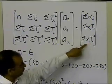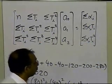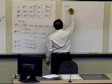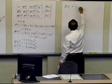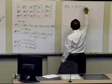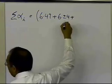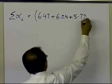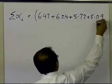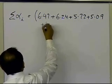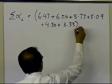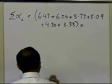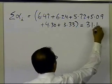I'm going to show you a couple of those, and the third one you can do as homework. The summation of alpha_i values is simply adding all the alpha values which are given to you: 6.47 plus 6.24 plus 5.72 plus 5.09 plus 4.30 plus 3.33, and this value turns out to be 31.15.